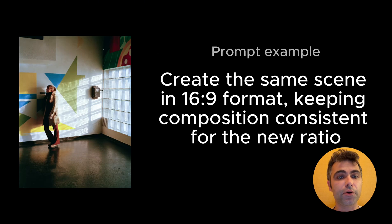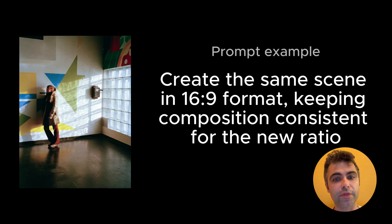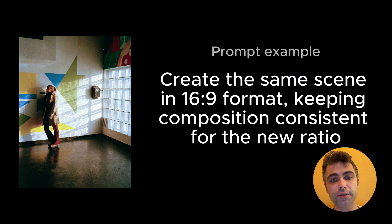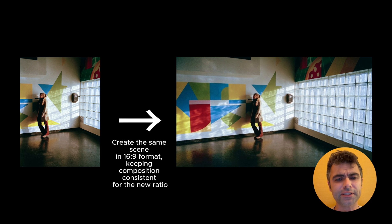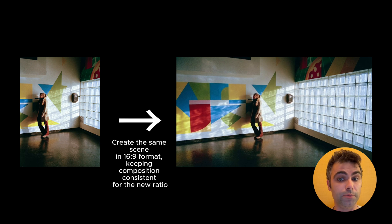Next is a very common case – changing the aspect ratio of the image without distortion. Suppose we have this image in 3x4 and want to turn it into 16x9. NanoBanana will do exactly that – drawing the new parts of the image. It works really well for simple compositions like this one, where we have repetitive objects to the right and left of the focal point object.